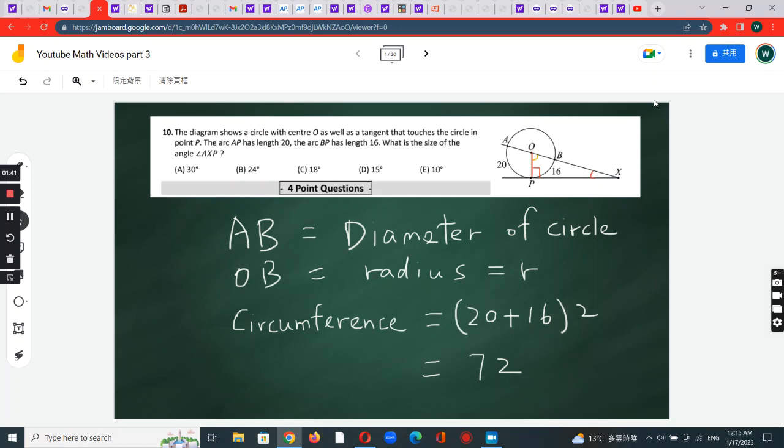To start, we have to recognize that AB, this length, is obviously the diameter of the circle. Therefore OB is the radius, and OP is also the radius.